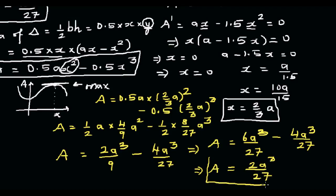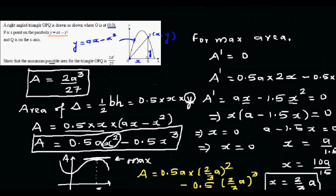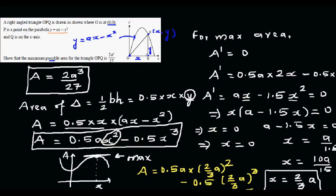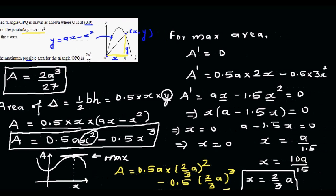This was an excellence question from the NCA Level 2 exam paper 2012. To summarise: the area of the triangle is half base times height, where the base is X and height is Y. You write Y in terms of X using Y equals AX minus X squared, substitute, expand, differentiate, set equal to zero, and solve. When X equals 0, the area is 0 — that's the minimum — so X equals 2A/3 gives the maximum.